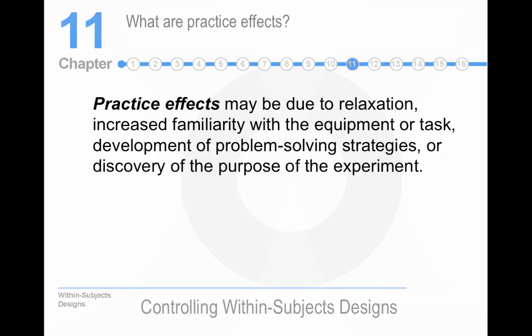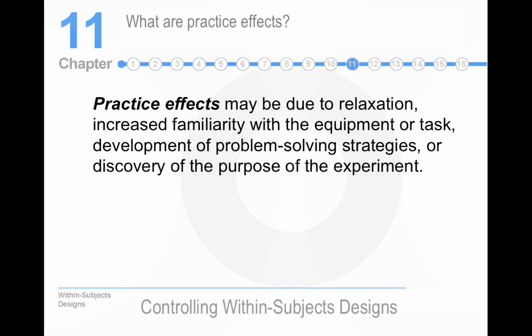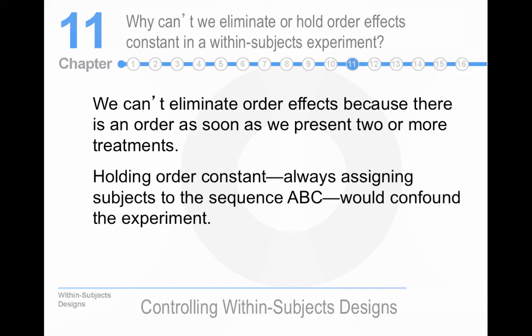We can't eliminate order effects because as soon as we have two or more treatments, we've screwed it up. And we can't always give people the same order. Why not just give everybody in the study the same order? A, B, and then C. Well, if B is always following A and C is always following B, that's a confound right there in your study. And so, that's problematic.